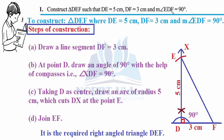Always write your aim first, then the steps of construction. Whenever you see 90 degrees, visualize the sketch mentally — the triangle will look like a right angle. First step: draw a line segment DF equals 3 cm. We take DF equals 3 cm because we need to construct 90 degrees at D. Use a ruler for this simple step.